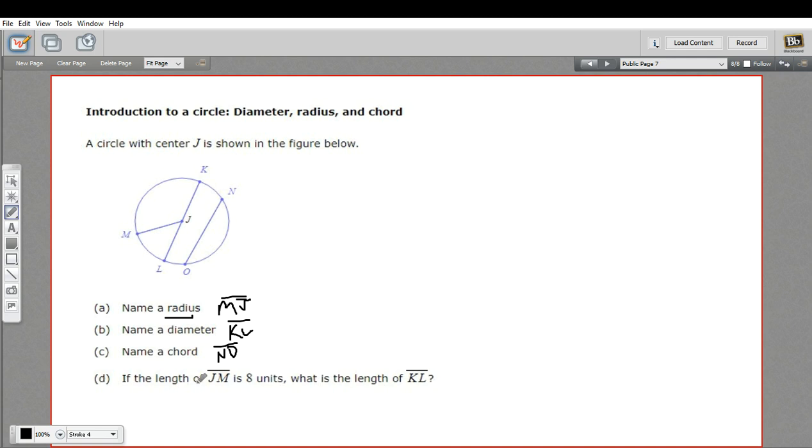D says if the length of JM, so that's our radius, is 8 units, what is the length of KL? Well, KL is our diameter, and you'll know that this diameter is made up of two radii. So if you want to find the length of a diameter, you just take the radius and double it. So that length is going to be 16.